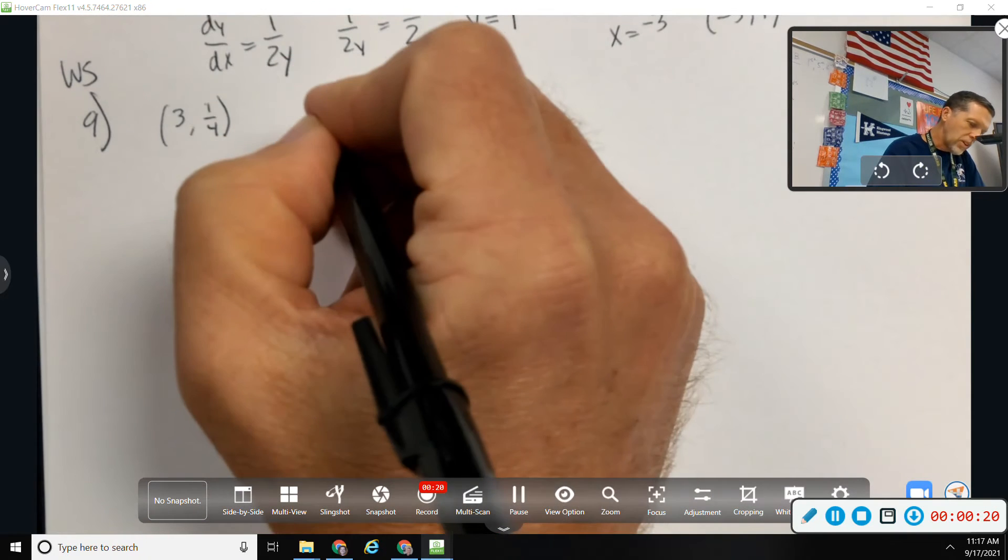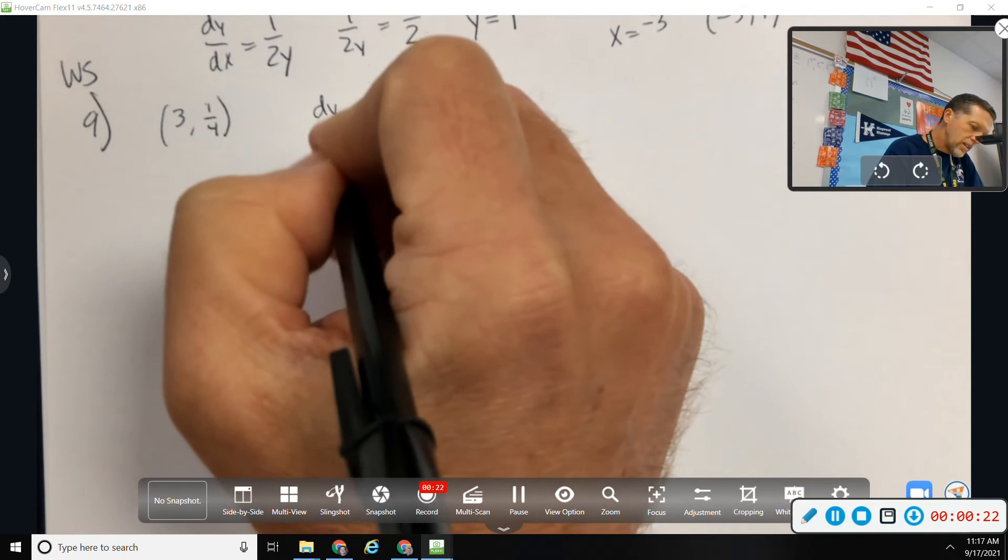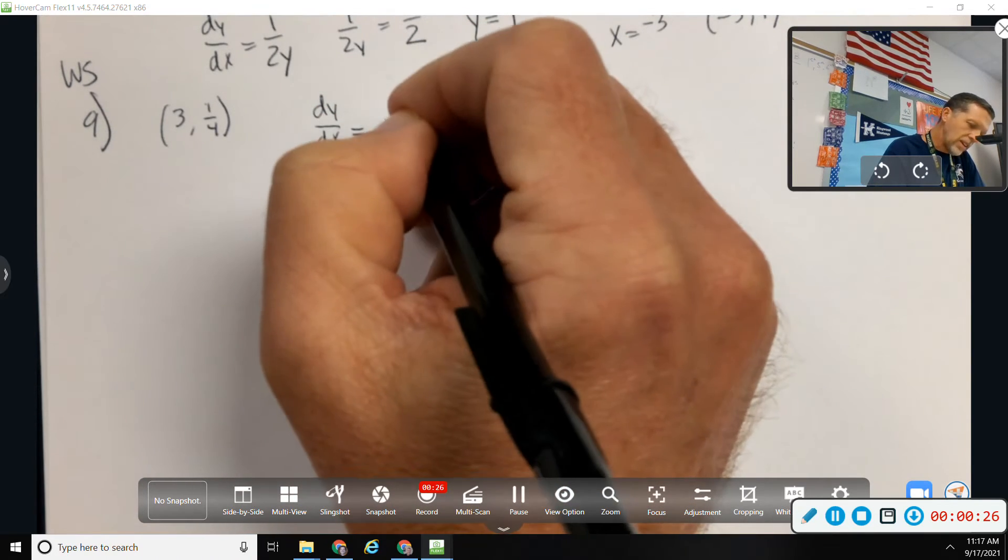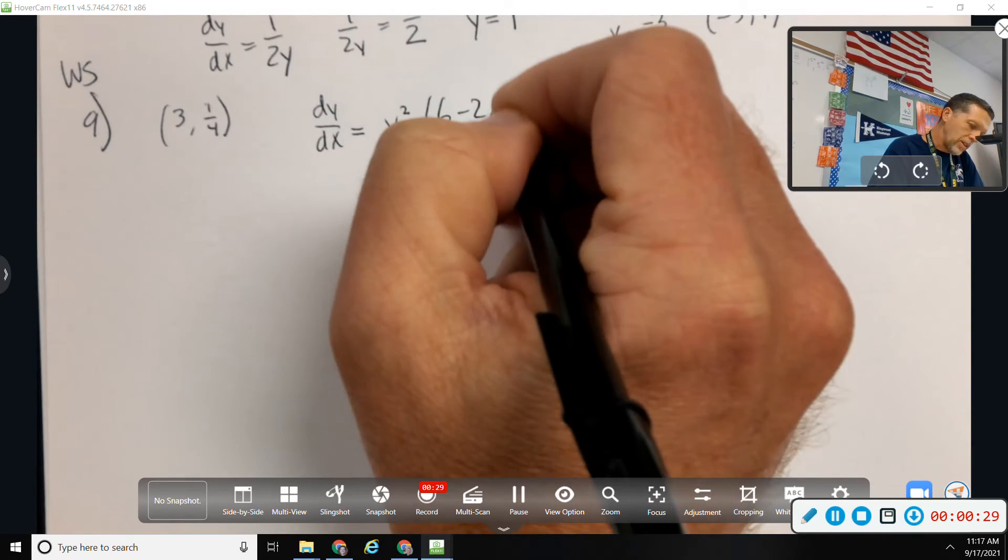1 fourth is on the graph of y equals f of x. And the slope is given by the derivative,